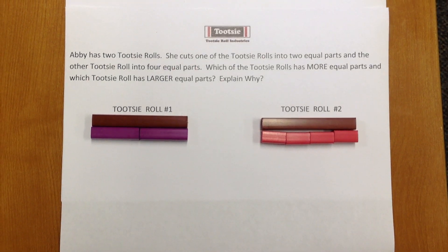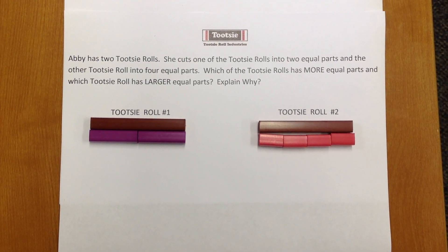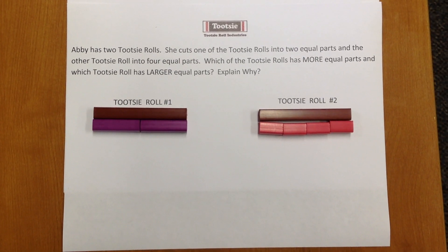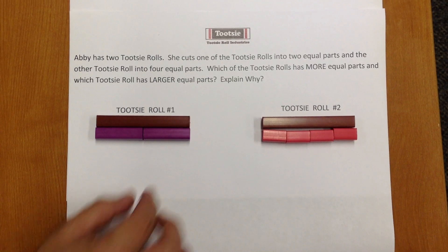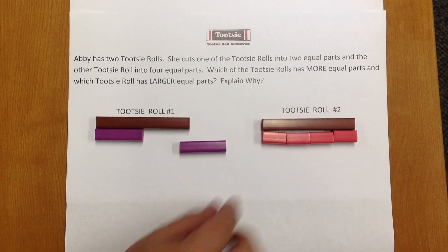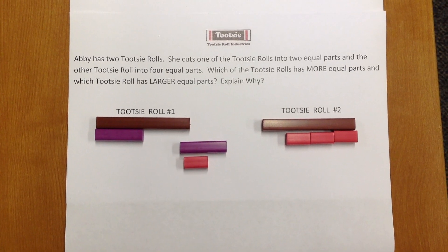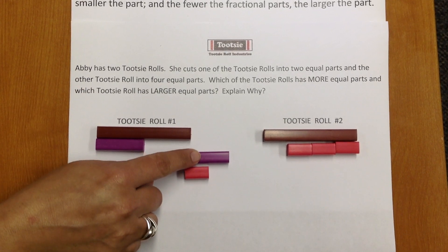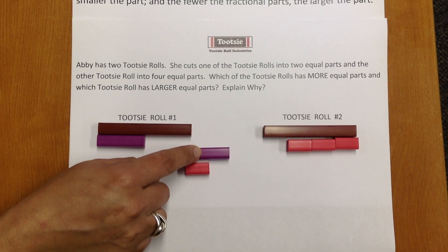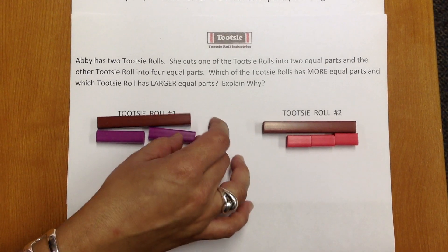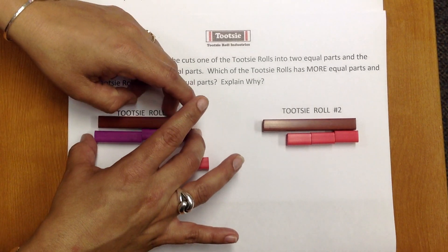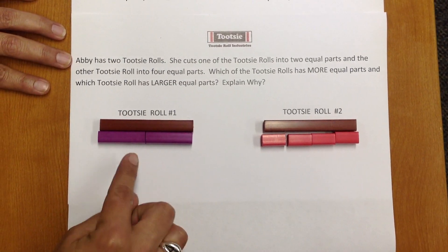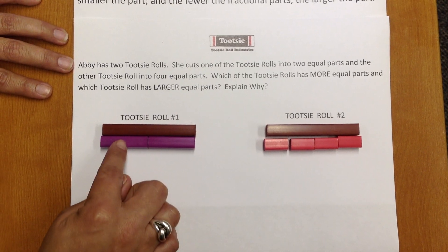Which of the Tootsie Rolls has more equal parts and which Tootsie Roll has larger equal parts? Explain why. Let's compare the two parts. Let's look at one purple and one red. When we compare the two parts, we can see that purple has the larger equal part. When we count the parts, we see that Tootsie Roll one has two parts — one, two.